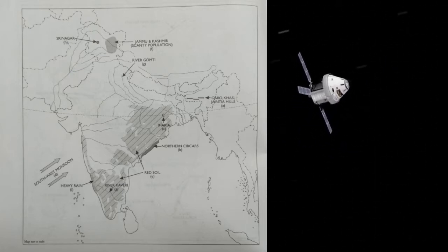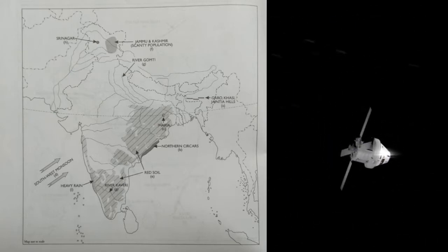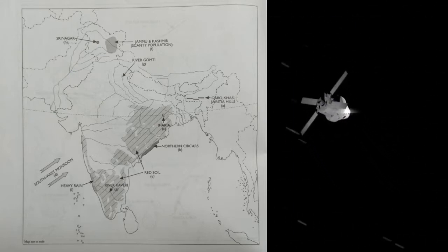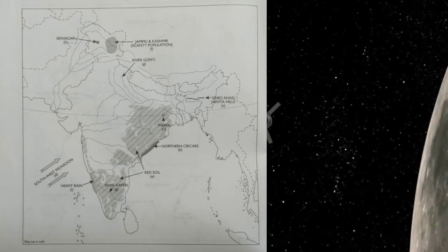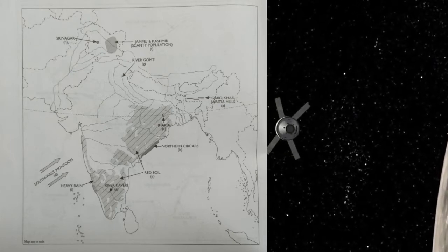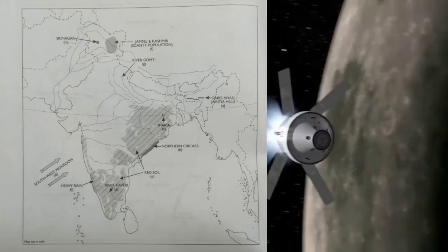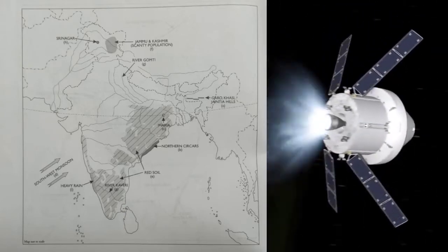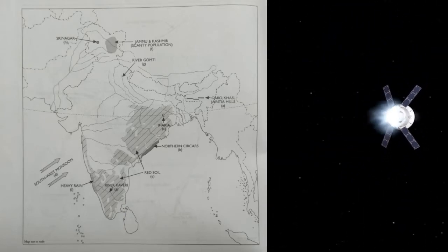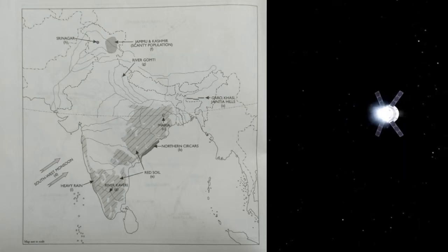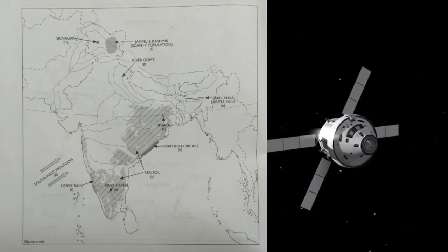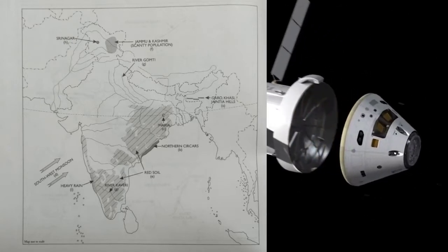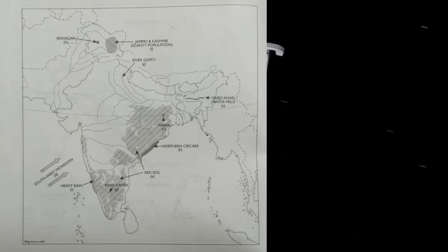Mark with an arrow and name the winds that bring maximum rain to the subcontinent in summer — 'D' is mentioned with an arrow. Mark an area of red soil — area 'E' shows red soil.